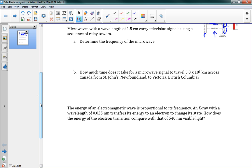So let's take a look at these problems here. First one says microwaves with a wavelength of one and a half centimeters carry television signals using a sequence of relay towers. Part A, we want to determine the frequency of the microwave. Well, we have V equals F lambda. So I want to determine the frequency. F is equal to V over lambda, which is equal to C, which is 3.0 times 10 to the 8, divided by our wavelength, which is 0.015 meters. And we get a result of 2.0 times 10 to the 10 hertz. So that's our frequency.